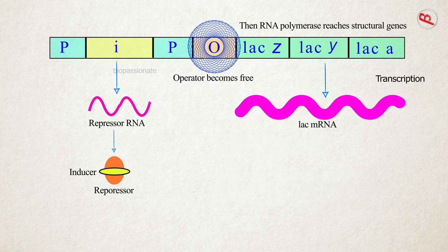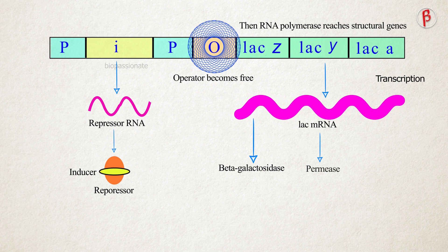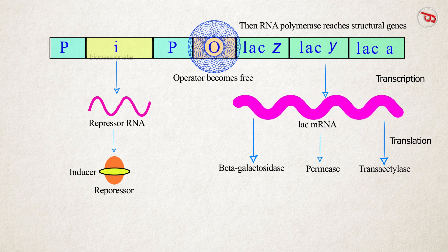This lac mRNA is known to be polycystronic which produces all three enzymes called beta-galactosidase, permease, and transacetylase.